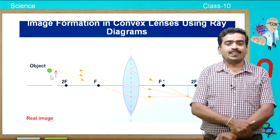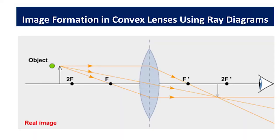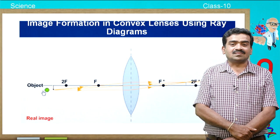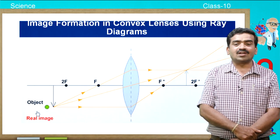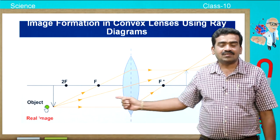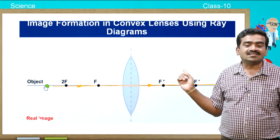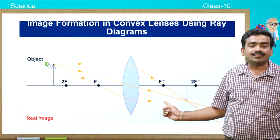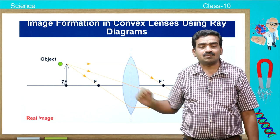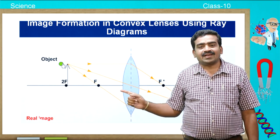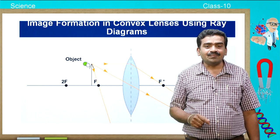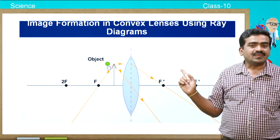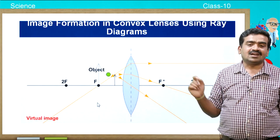Let us learn the image formation in case of a convex lens using ray diagrams. If you conduct an experiment with a screen, a convex lens, a candle, and place the object at different distances, you will get the image on the other side of the lens on the screen, and the image size varies with the object distance or object position. We can test this geometrically by drawing ray diagrams. Let us learn one by one where we place the object and what will be the nature and position of the image.